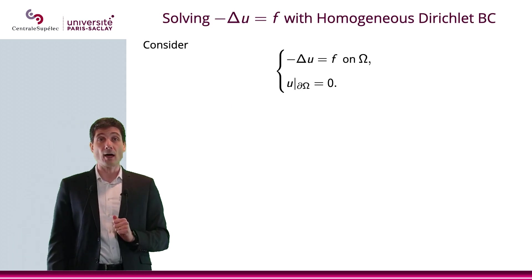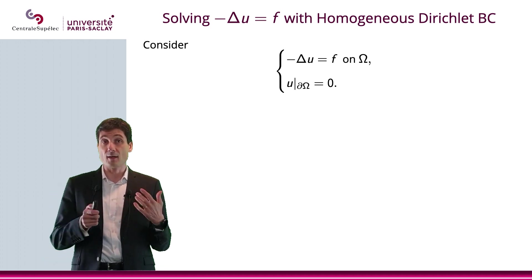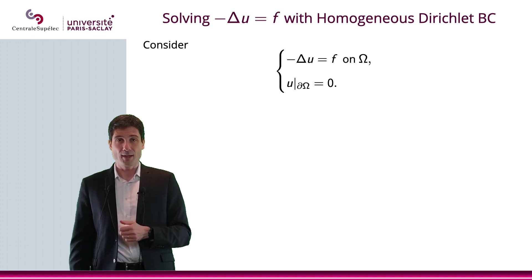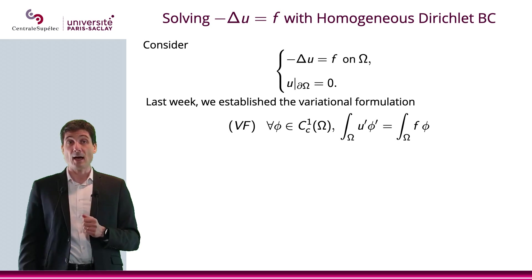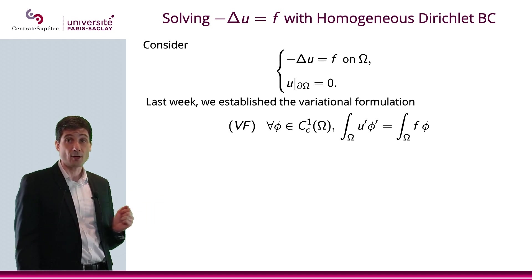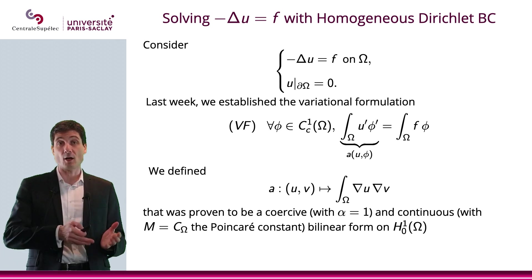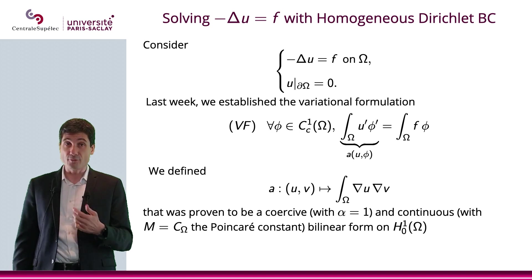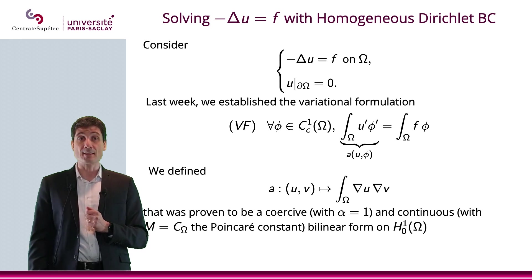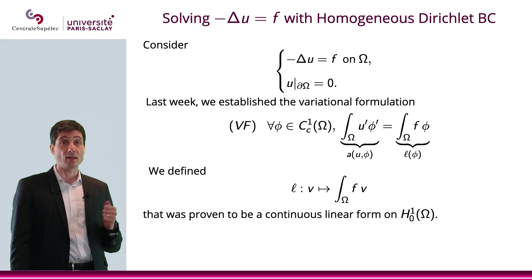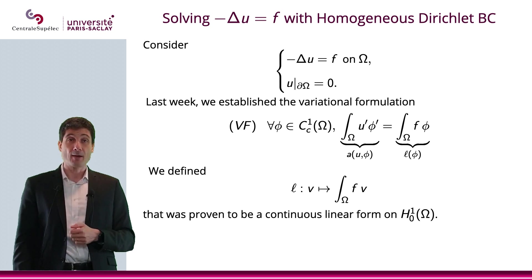Okay, now let us consider our partial differential equation minus Laplace U equals F on omega with the homogeneous Dirichlet boundary condition. Now, as we have seen last week in chapter 4, we have established a variational formulation that is given here, where obviously we have a bilinear form A, which is the integral of del U del V, which has been proven to be coercive and continuous on H1, 0. We also have this linear continuous form L on H1, 0, which is the integral of FV.